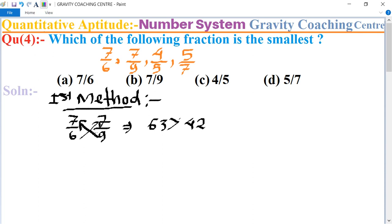So 7 by 9 is the smaller. Now compare 7 by 9 with 4 by 5. So 7 upon 9 and 4 upon 5. Multiply 7 into 5 and 9 into 4.